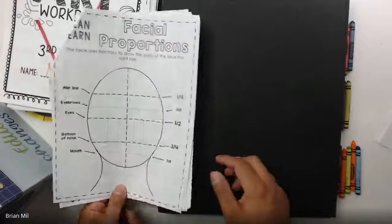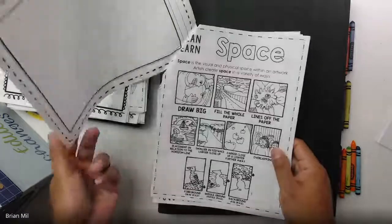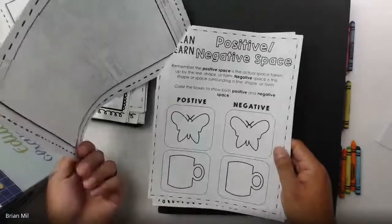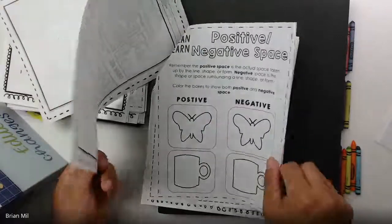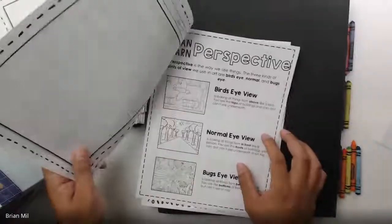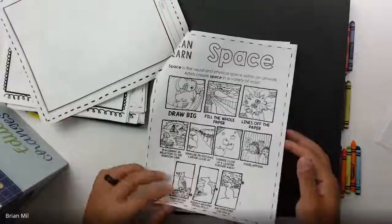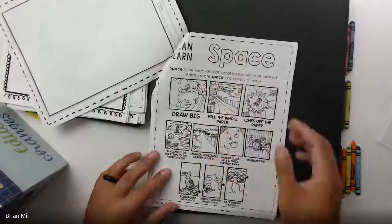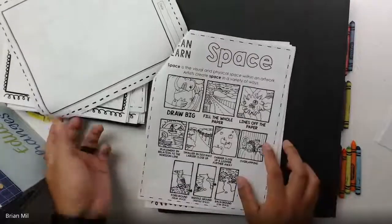Alright. We can kind of take a preview of what's going on next week. Next week, we're talking about space and positive negative space. Let me see what the time is. Alright. We don't really have time to go over space, really. So we're going to save this page and the following page for next week.